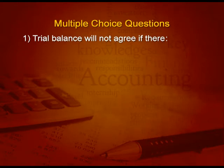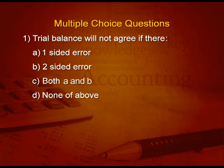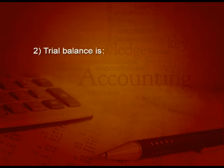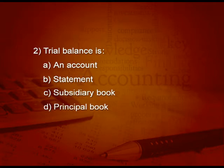Let us test our understanding with a few multiple choice questions. Question one: Trial balance will not agree if there is — option A: one sided error, option B: two sided error, option C: both A and B, option D: none of the above. The answer is A — one sided error. Question two: Trial balance is — option A: an account, option B: a statement, option C: a subsidiary book, option D: a principal book. The answer is B — it is a statement.